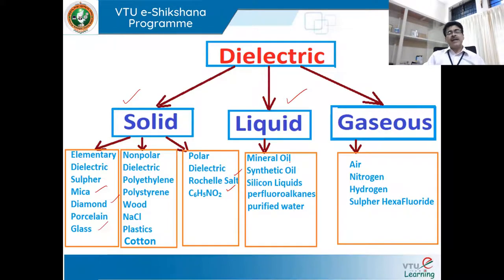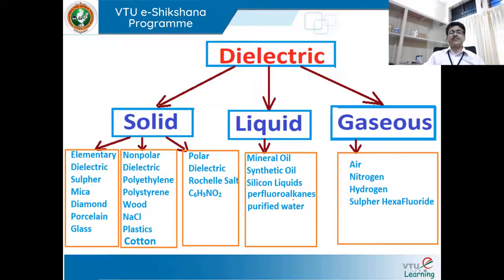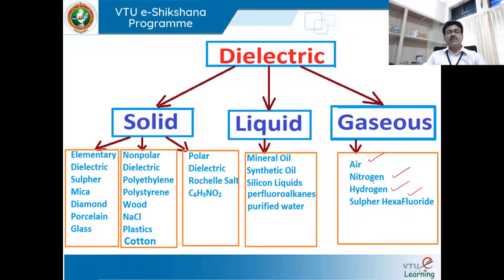The second composition is liquid dielectrics — dielectrics that are liquid in nature. Examples include mineral oils, synthetic oils, silicon liquids, perfluoroalkanes, and purified water. The third kind of dielectrics are gaseous, such as air, nitrogen, hydrogen, and sulfur hexafluoride. These are the types of dielectric material based on their state.